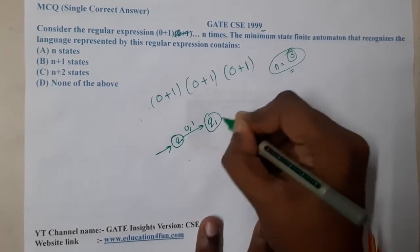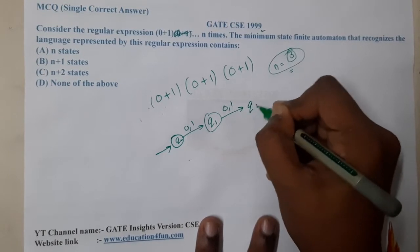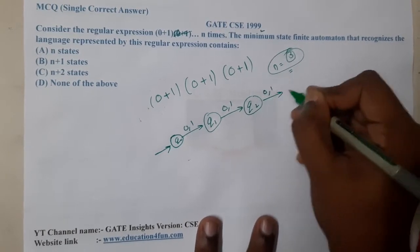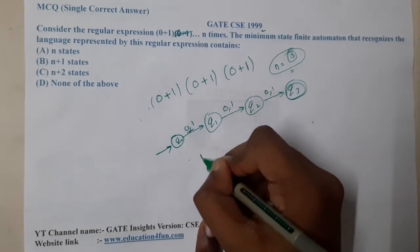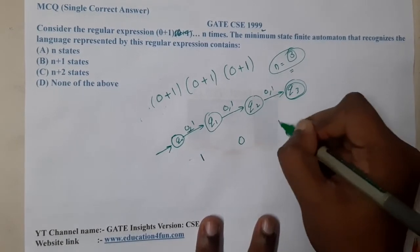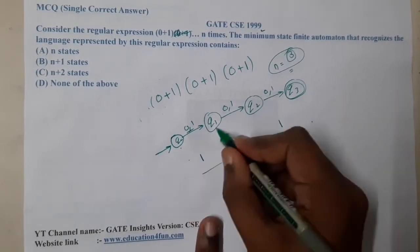Either you have 0 or 1, you go to q2. Either you have 0 or 1, you go to q3. So this is my final state because I got a three-digit number. How many states did I need?